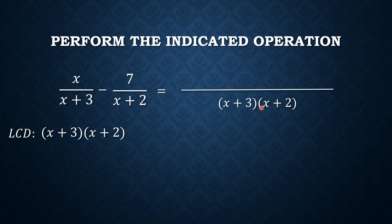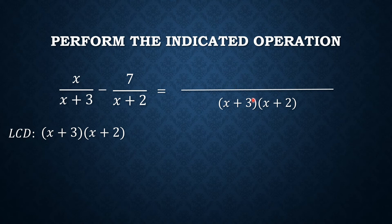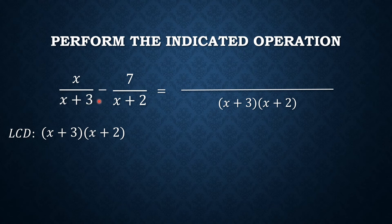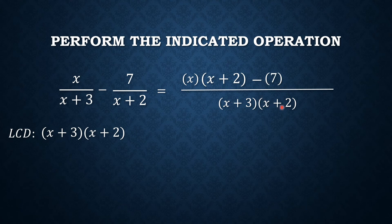Now, using the LCD, divide the LCD by each denominator, then multiply to their corresponding numerators so that the two rational expressions become similar. So, the LCD divided by x plus 3, that is x plus 2 times x. So we have x times x plus 2 minus the numerator, 7 times the result. x plus 3 times x plus 2 divided by x plus 2.